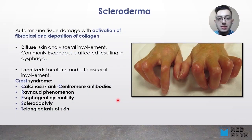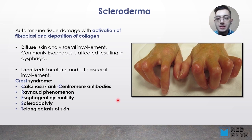The next autoimmune disease that we are going to talk about is scleroderma, and this is autoimmune tissue damage with activation of fibroblasts and deposition of collagen under the skin. So scleroderma is a formation or thickening of the skin.